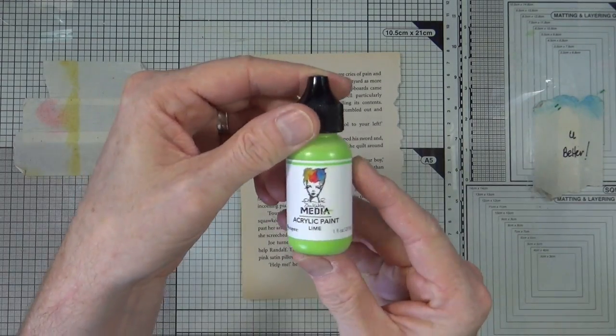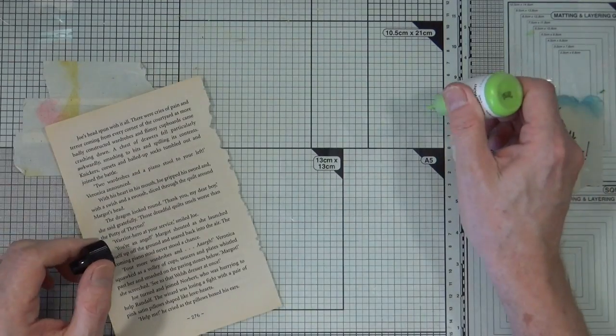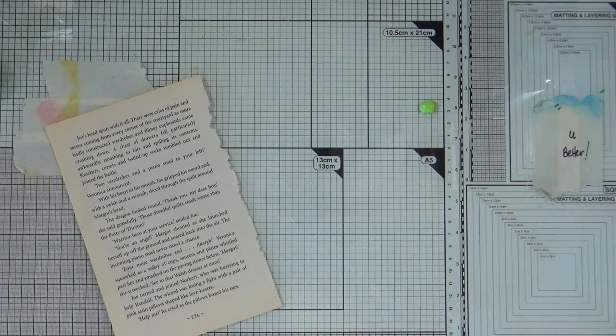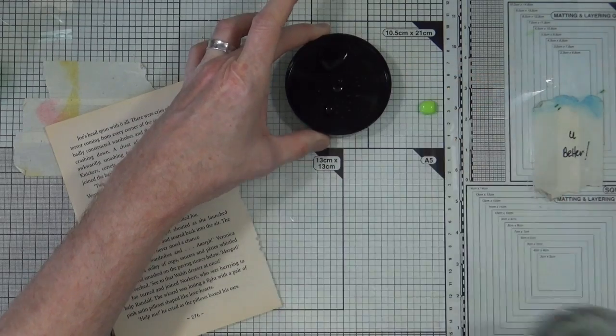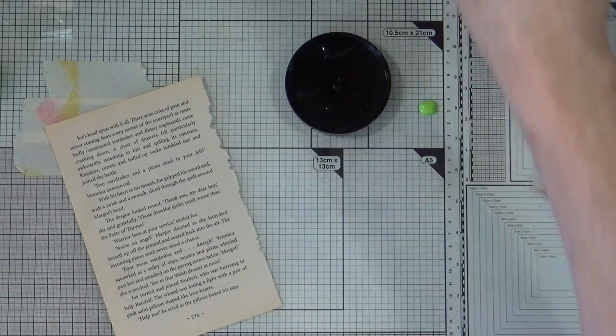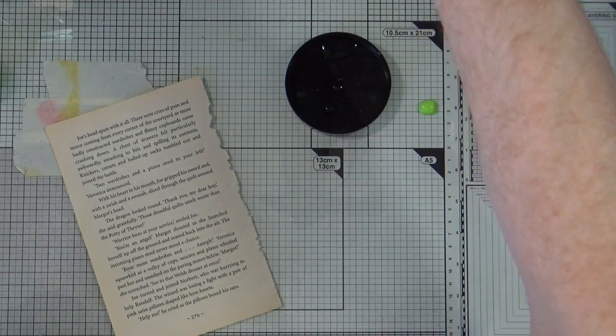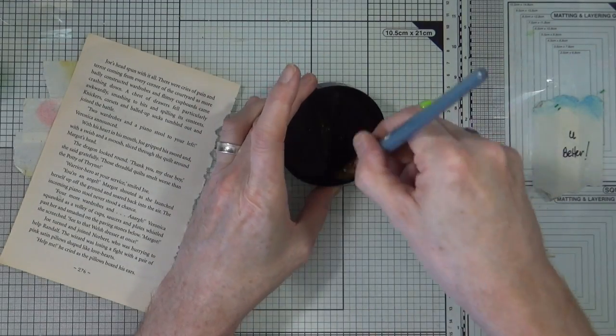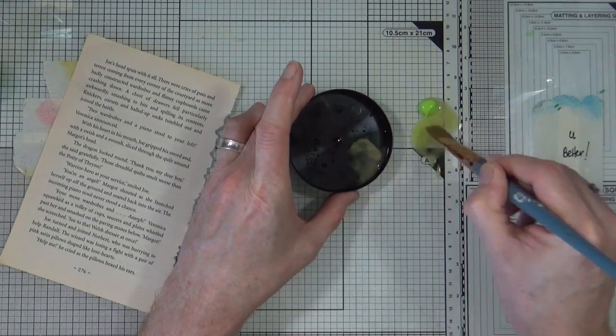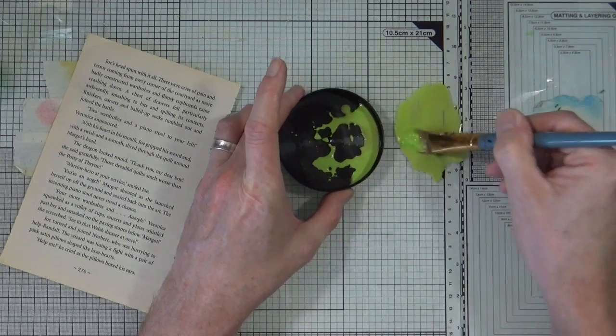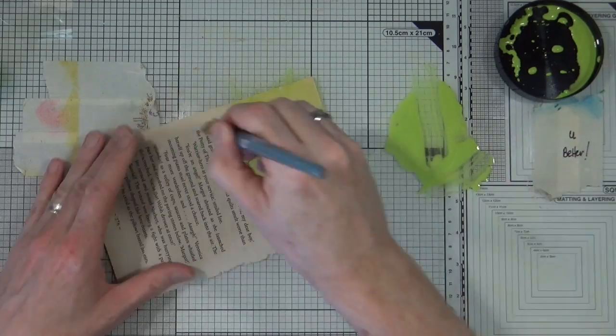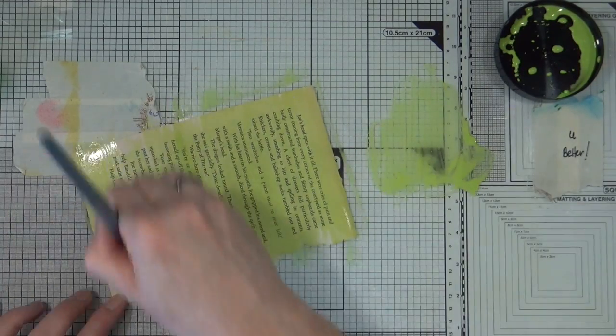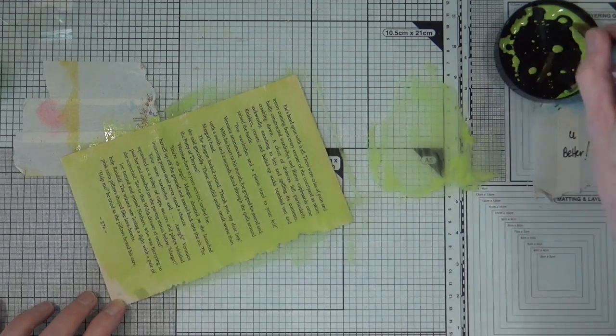So for step number four, I have a page of book text just torn from an old book that was going to the tip, and I have the lime acrylic paint from Dina Wakely Media, and I'm going to just mix it with some water to create a nice lime colour wash. Now I don't know why I put the paint on the craft mat. I must have just had a moment of madness. But anyway, I end up mixing the paint in the actual lid, kind of like a makeshift palette, just to hold all the watery paint.